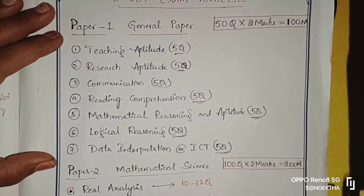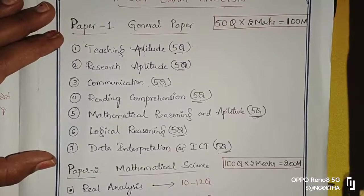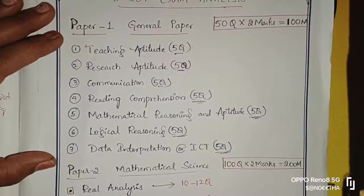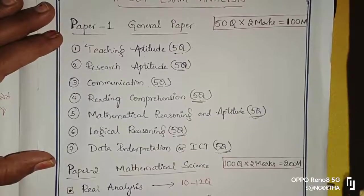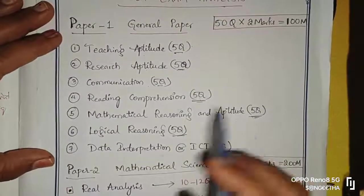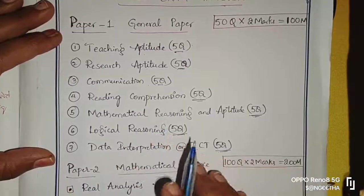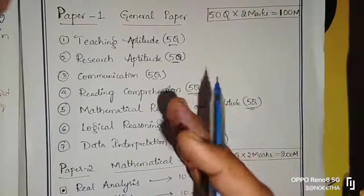Coming to Mathematical Reasoning and Aptitude, there are five questions. Logical reasoning is five questions. DI means Data Interpretation. And ICT - ICT is computer basic knowledge - there are five questions each. This is teaching aptitude.